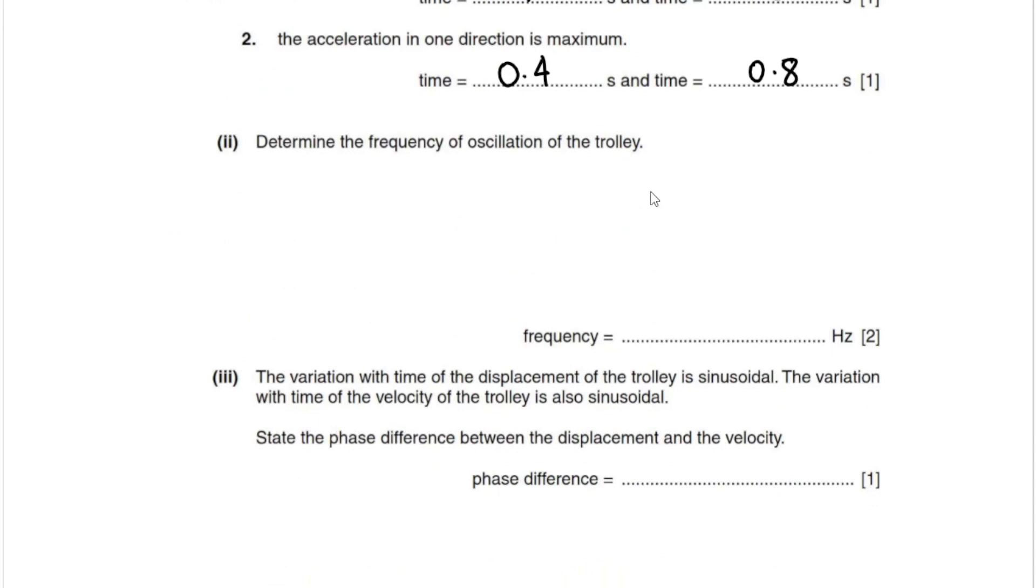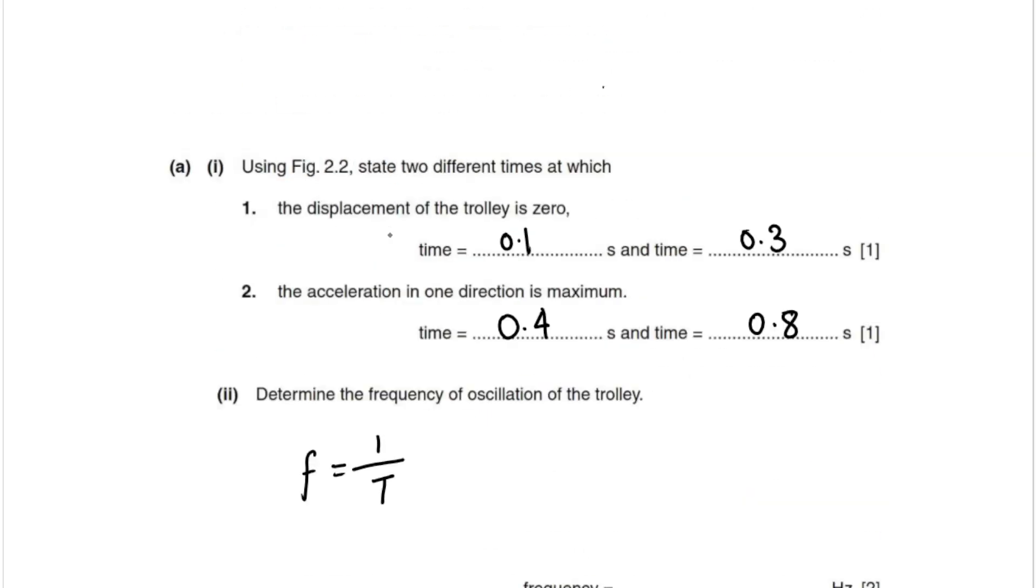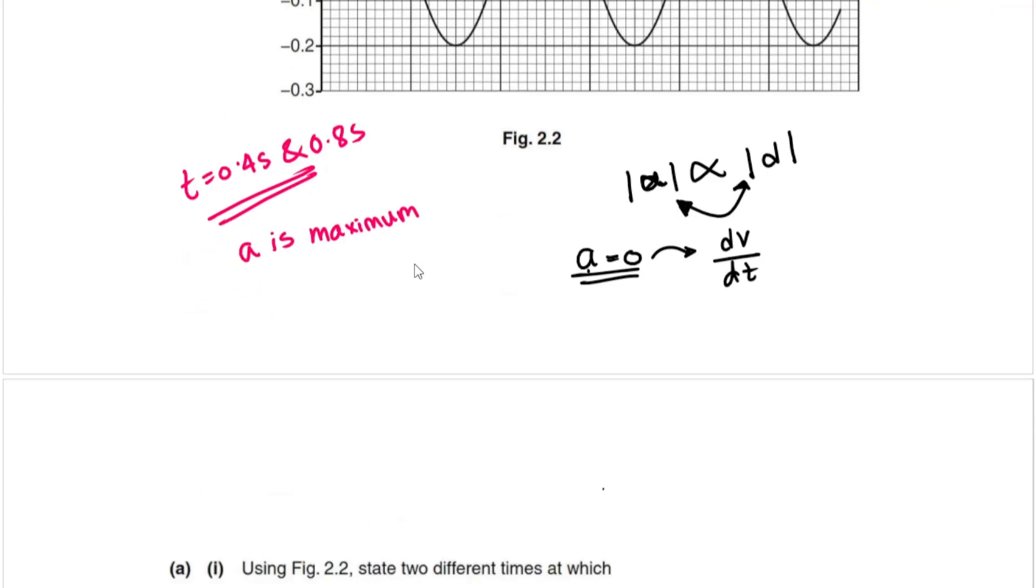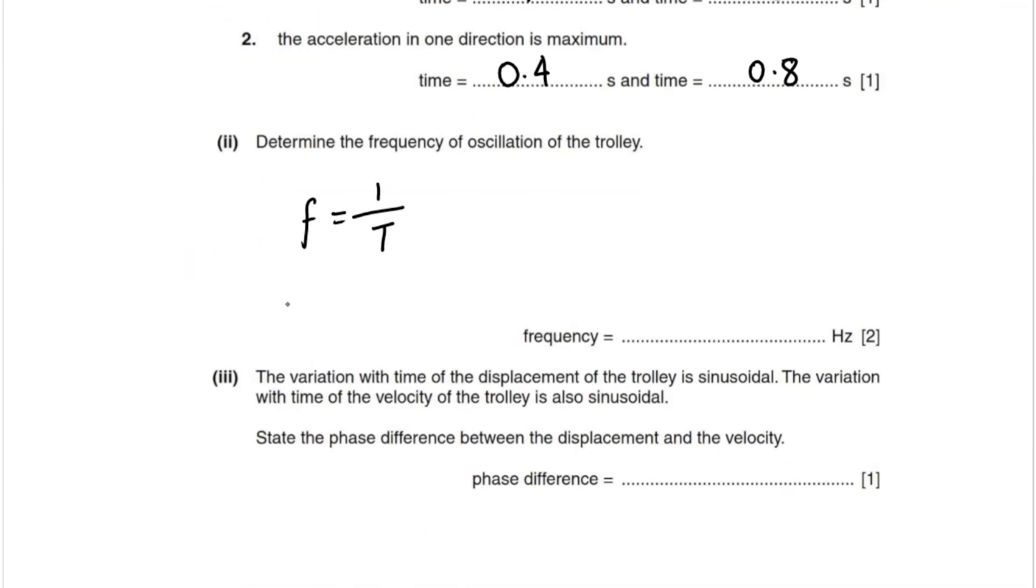In the second part of A we've been asked to find the frequency of the oscillation of the trolley. Frequency equals 1 by period. The period of this oscillation is 0.4 seconds, so t equals 0.4 seconds. Frequency is 1 by 0.4, which gives us 2.5 Hertz.